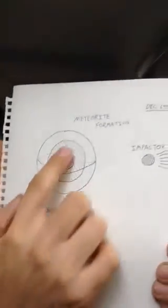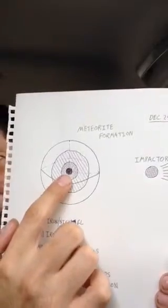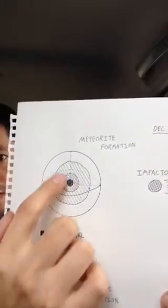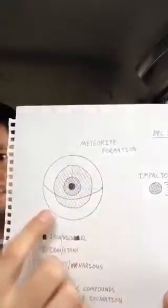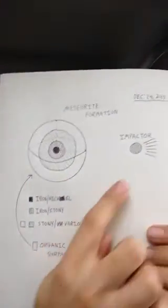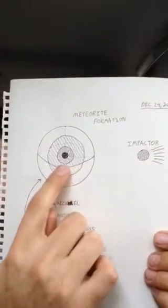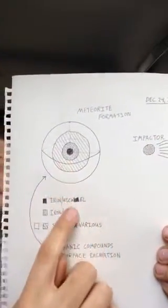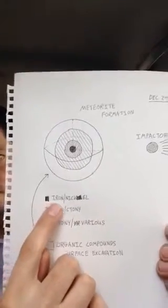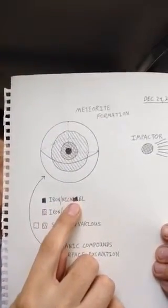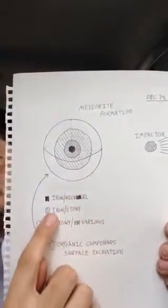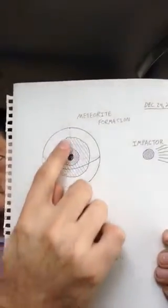I drew a little diagram here — it's not high artist quality, but I did my best. First, you have an object such as the Earth, and you have your core, your outer core, your mantle, your outer mantle, and your crust. You also have an impactor. Depending on how much the impactor impacts this main object will determine what kind of meteorite is formed. So you have your iron and nickel alloys in the center, and you have your iron and stony meteorites, which are the outer core.